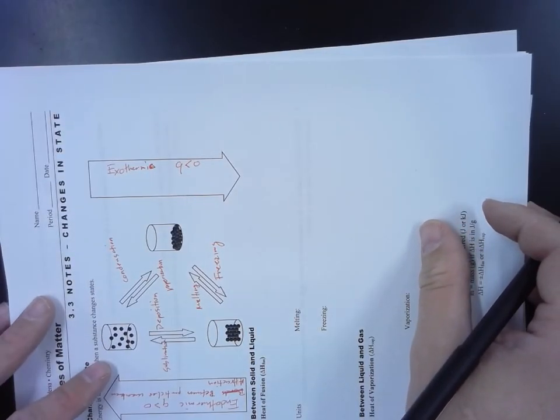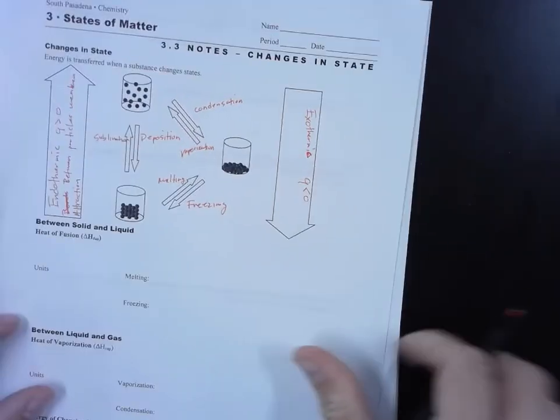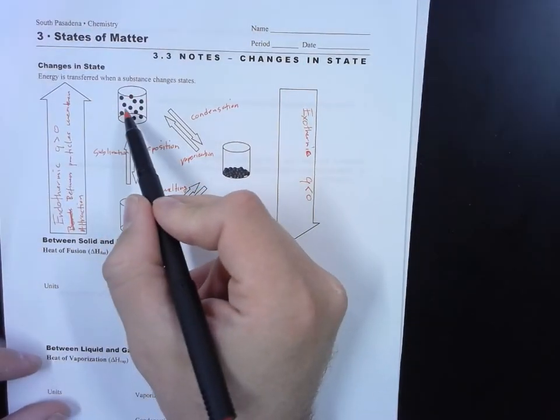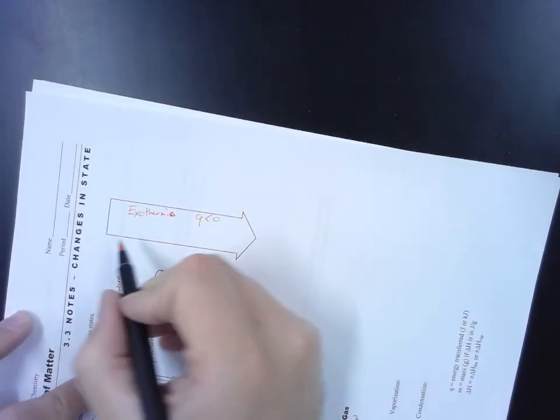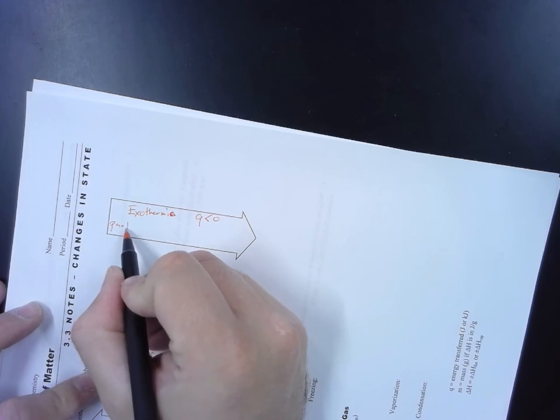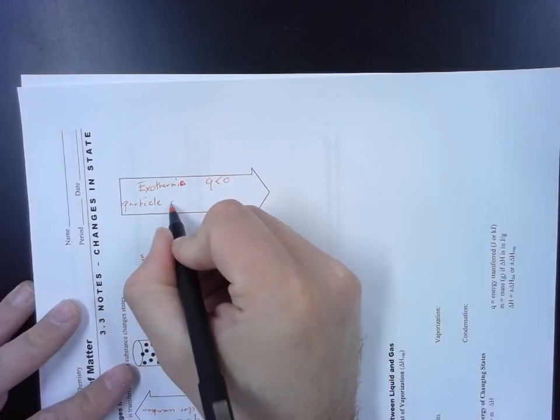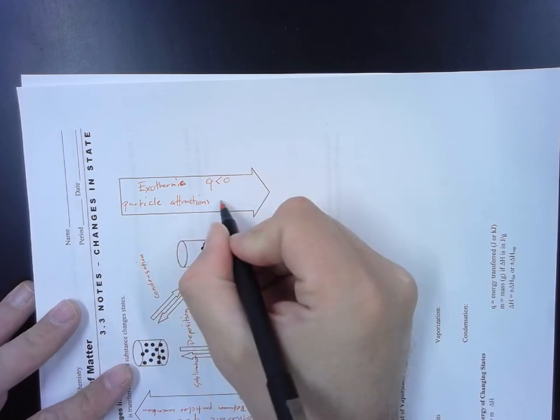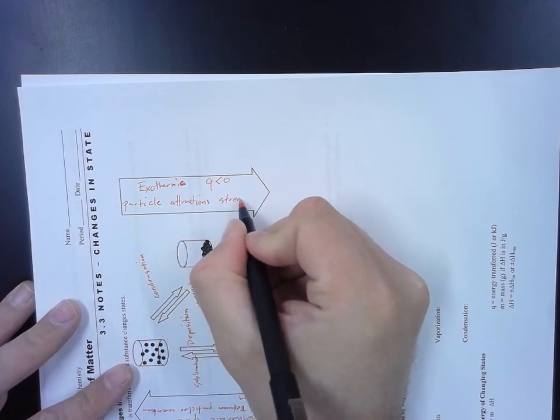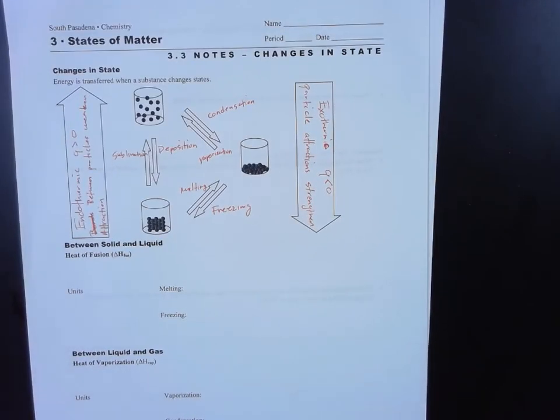Q is going to be less than zero. And what happens to these attractions? Well, you can just look at it and see visually—they're far apart here, they're closer together here, and they're the closest together there. So attractions become stronger. Particle attractions strengthen. I'm going to go ahead and stop that video here. That'll be the end of part one.